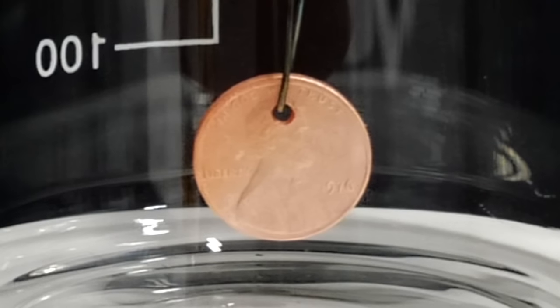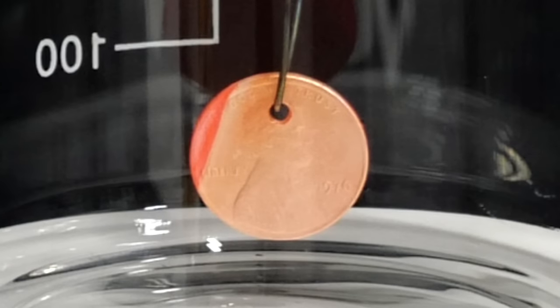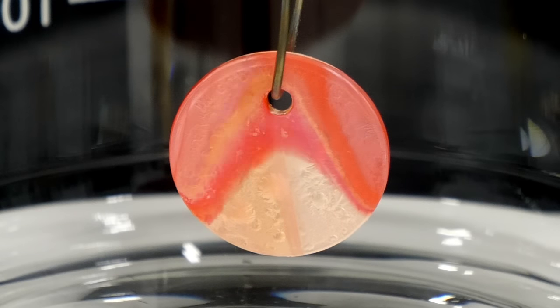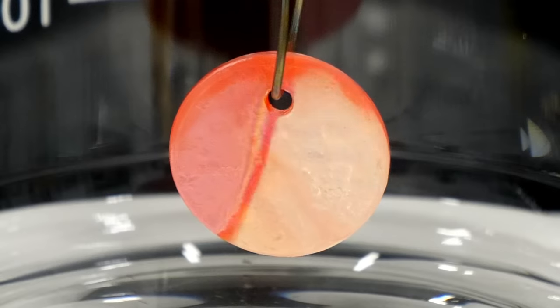At first, it didn't look like much was happening, but then the edges started turning red. This was happening because the hot copper in the penny was catalyzing a reaction between the acetone vapors and the oxygen in air. It was generating a lot of heat, and it was enough to keep the reaction going and to keep the penny red hot.